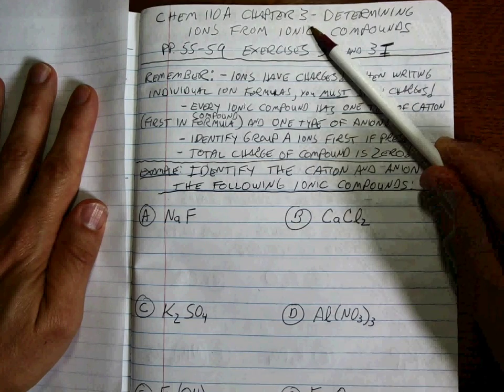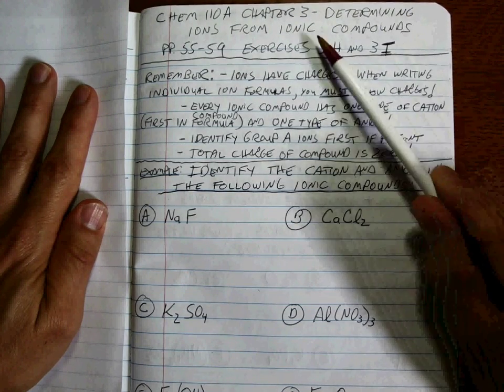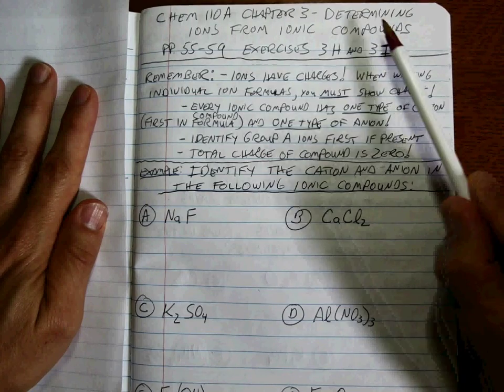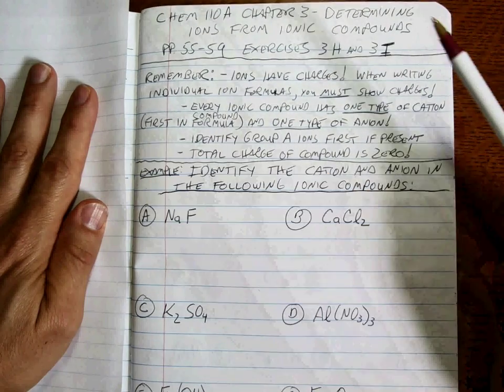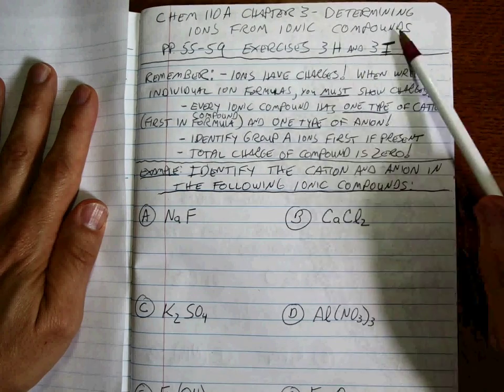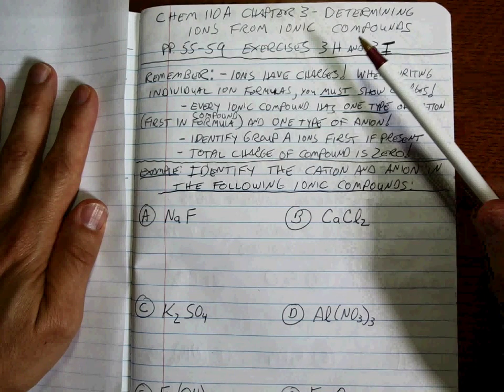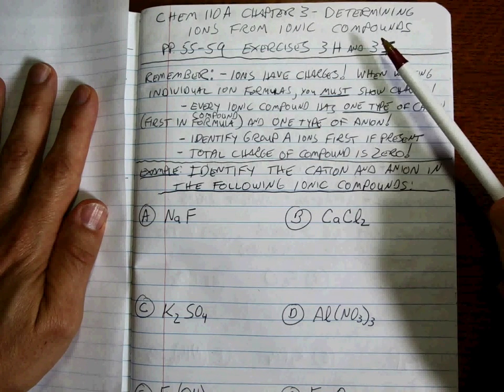Okay, we're still in Chapter 3. Now what we're going to do is we're going to take ionic compounds and split them up into their individual ions. We're going to look at an ionic compound and we're going to say, what is the cation and what is the anion?